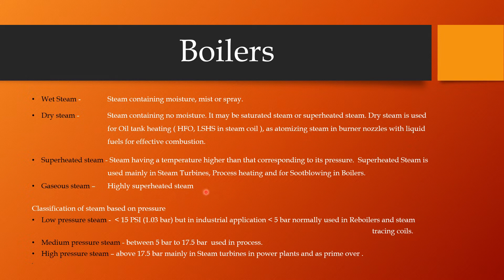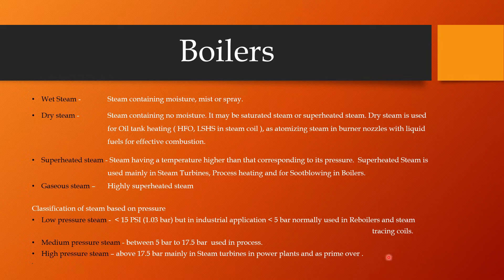Gaseous steam is highly superheated steam and is also used in power plants and steam turbines. Further, steam is classified based on pressure. Low pressure steam is less than 15 psi or 1.03 bar; in industrial applications it is generally considered less than 5 bar, and is used in re-boilers and steam coils. Medium pressure is between 5 bar and 15 bar, used in process applications. High pressure steam is above 15 bar, mainly used in steam turbines, power plants, as a prime mover in place of motors, and in processes requiring superheated steam at high pressure.